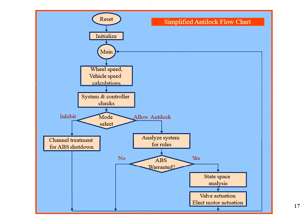A simplified ABS flow diagram: the program is initialized with wheel speed, vehicle speed, and calculations. The controller checks whether to inhibit the ABS channel treatment; if not required it stops and applies normal brakes. If the anti-lock brake system is allowed, the system uses rules to analyze whether slipping is happening and at what point the pressure slip is occurring. Based on those rules, it goes to state space analysis and valve actuation and electronic multi-actuation, then repeats the cycle. If no ABS is required it gives no signal and applies normal braking. This is the ECU program flowchart for better control using an ABS system.